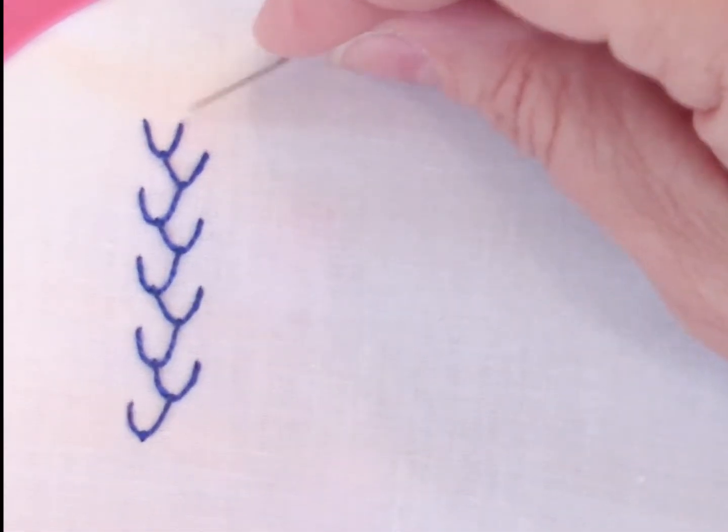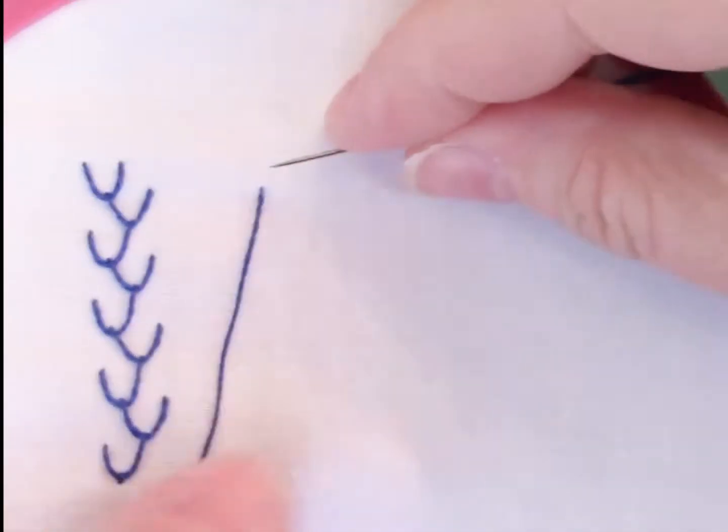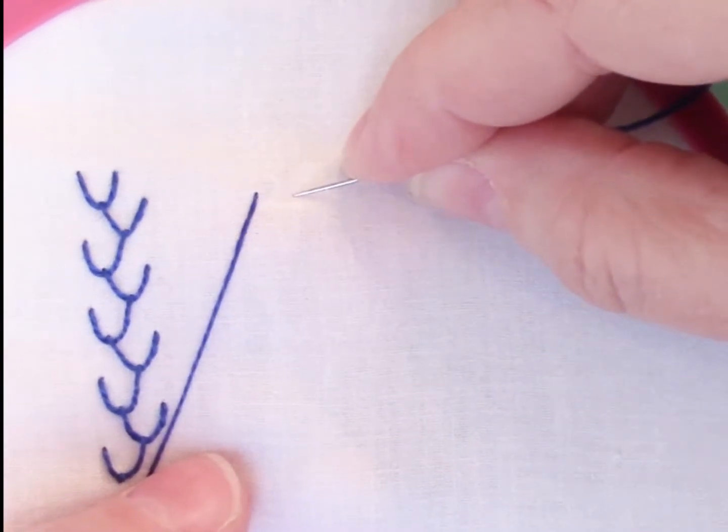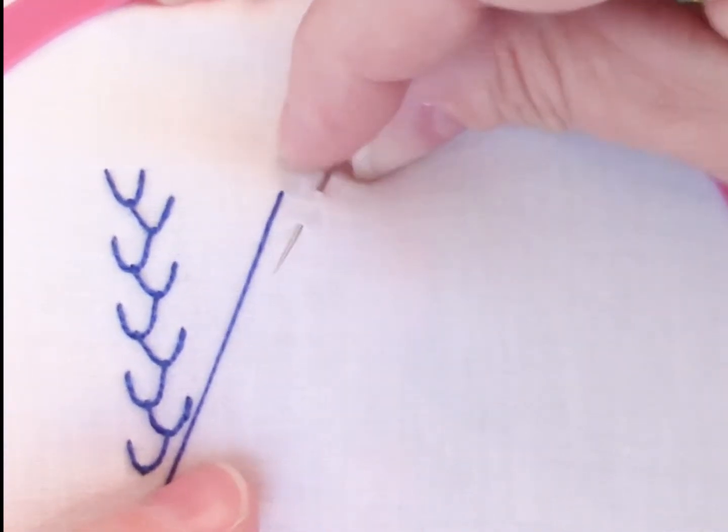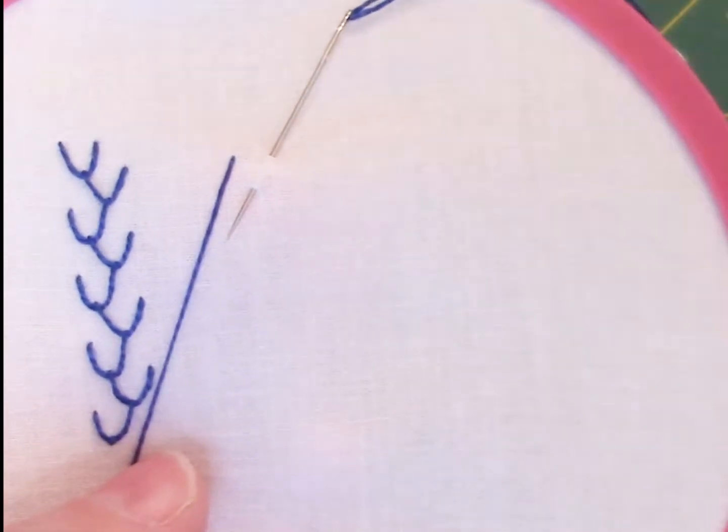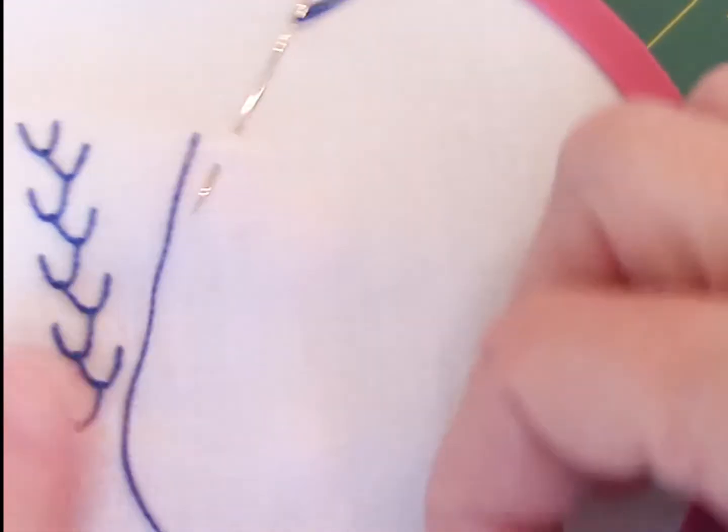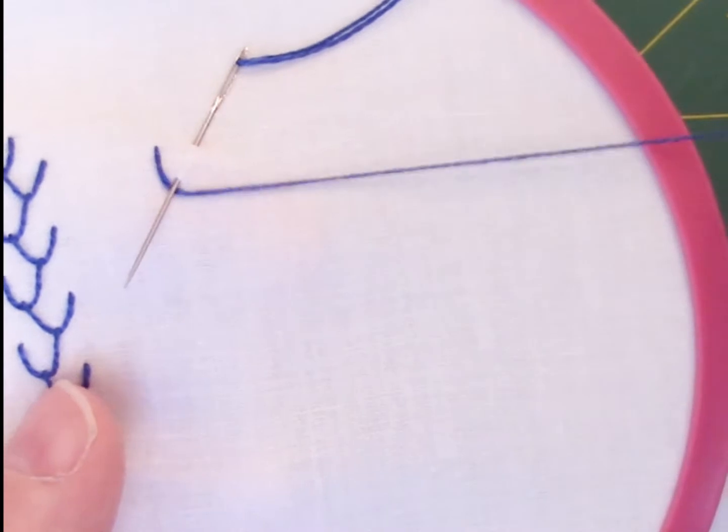So we're going to start at the top, and you can come up at either of the top two points. I'm going to come up, and then I'm going to go down straight across from that. I'm going to bring my needle back up in the V. This is just like when we're making the fly stitch. Make sure your thread is under the needle.